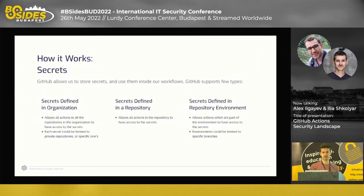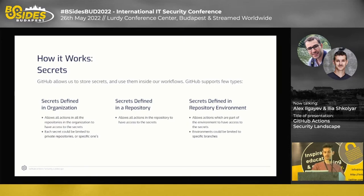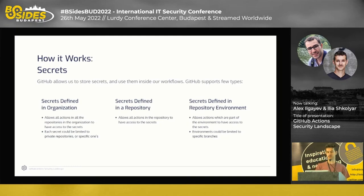Another core mechanism in GitHub is secrets. Any meaningful CI/CD workflow will need secrets — for example, AWS access tokens or passwords for registries. GitHub gives the option to store secrets in a well-encrypted manner, and decrypts and adds them to the workflow payload when needed. Secrets can be defined at organization scope, repository scope, or repository environment scope.